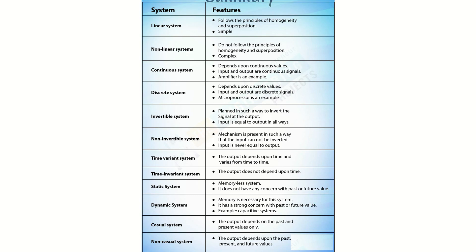Causal systems: the output depends on the past and present values only. If you build a system based on past and present, those are causal systems. Non-causal systems: the output depends on past, present, and future values. I suggest — since this is such an important subject — before entering into artificial intelligence, machine learning, or deep learning, try to understand the significance of mathematical models and signals and systems. Then we can jump into sensors, data, data analysis, and predictive algorithms.